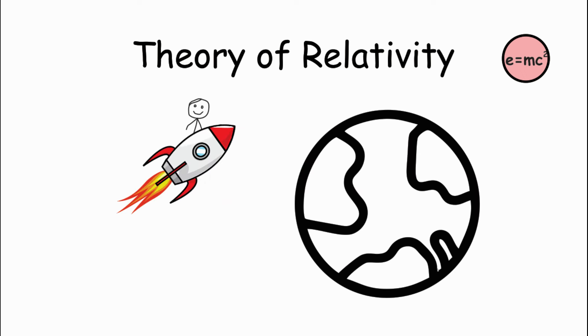Theory of Relativity: Imagine two friends, John and Harry, who are both ten years old. John gets on a spaceship and travels around space close to the speed of light, while Harry stays on Earth.